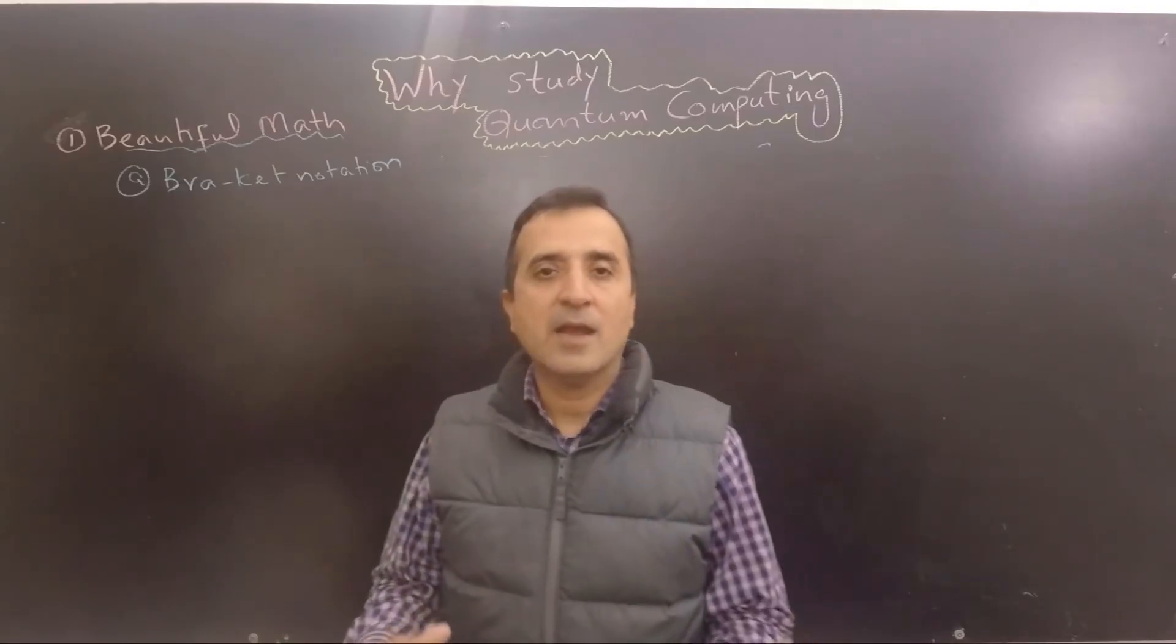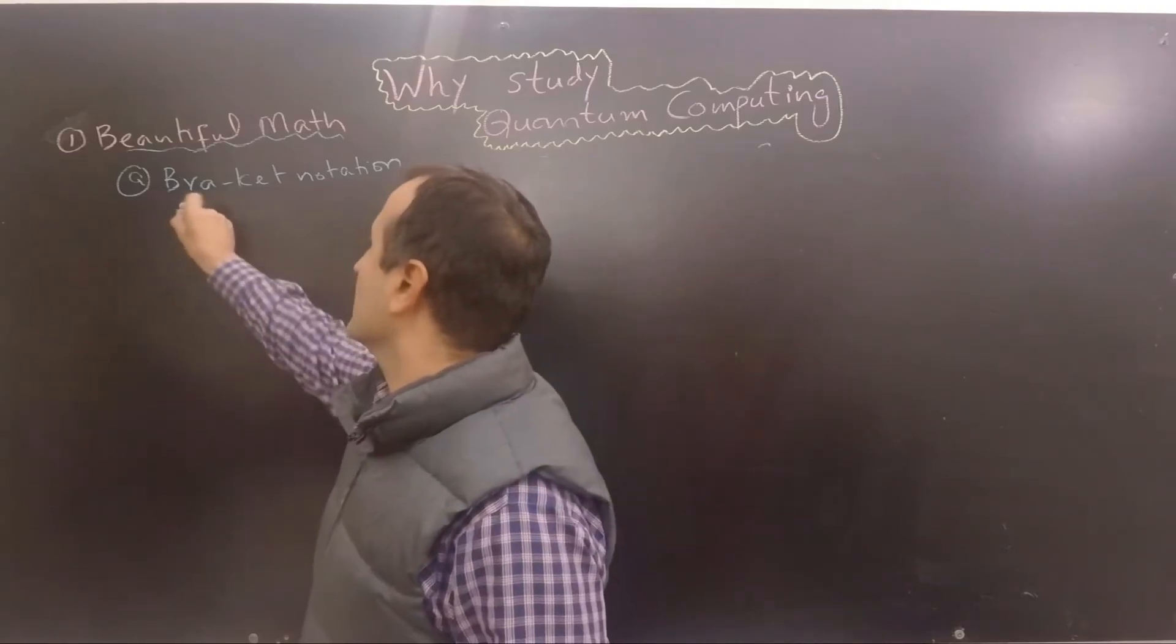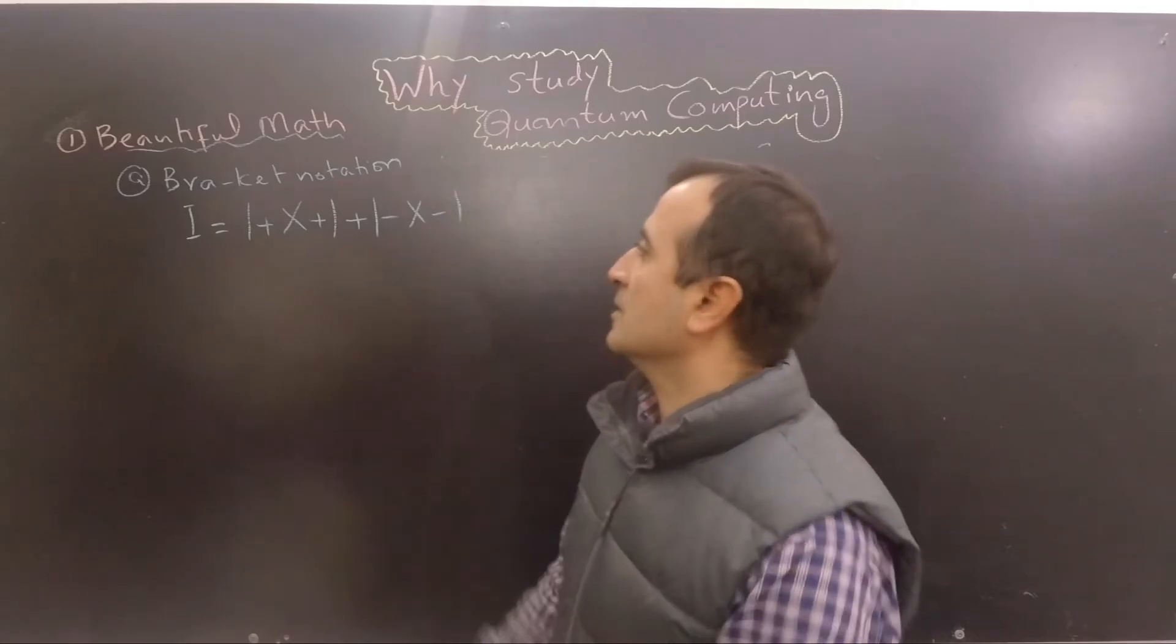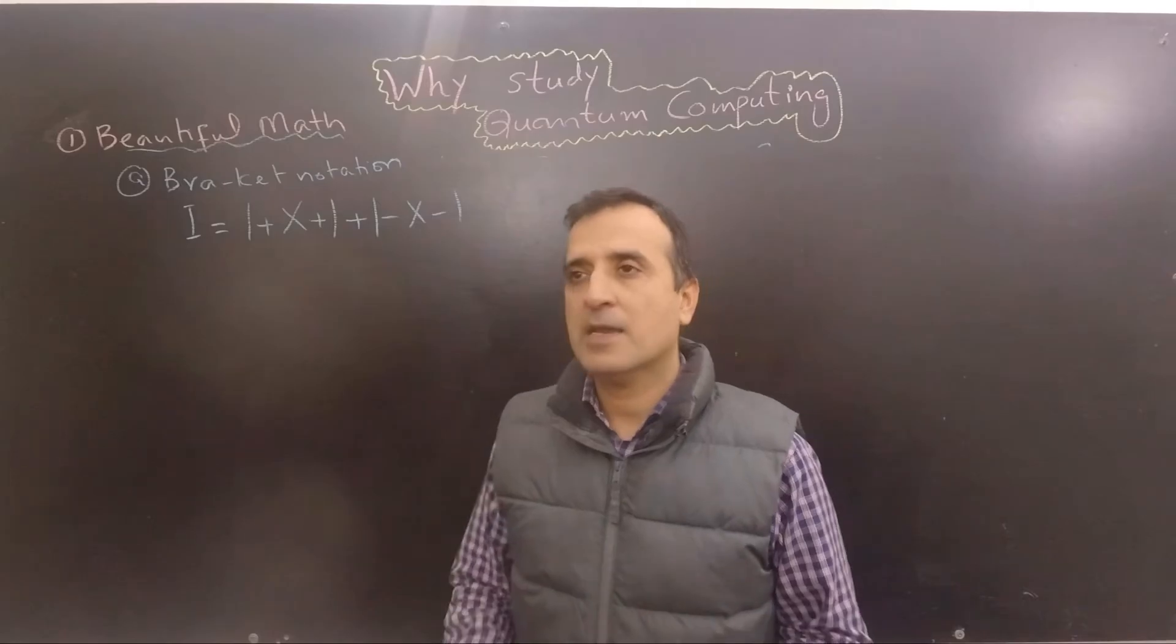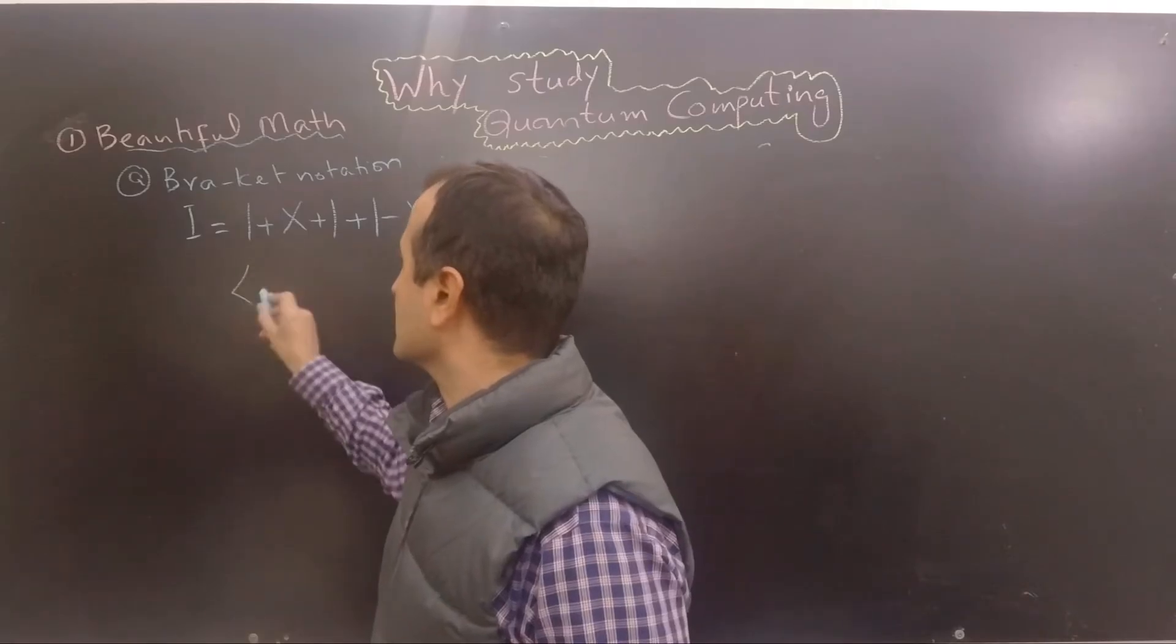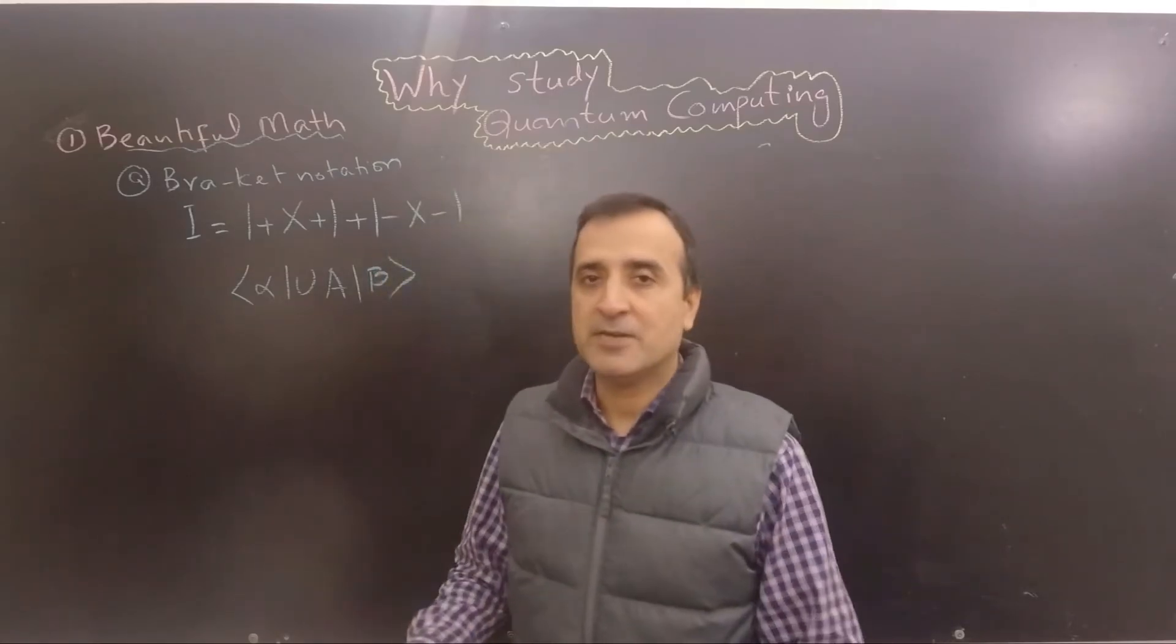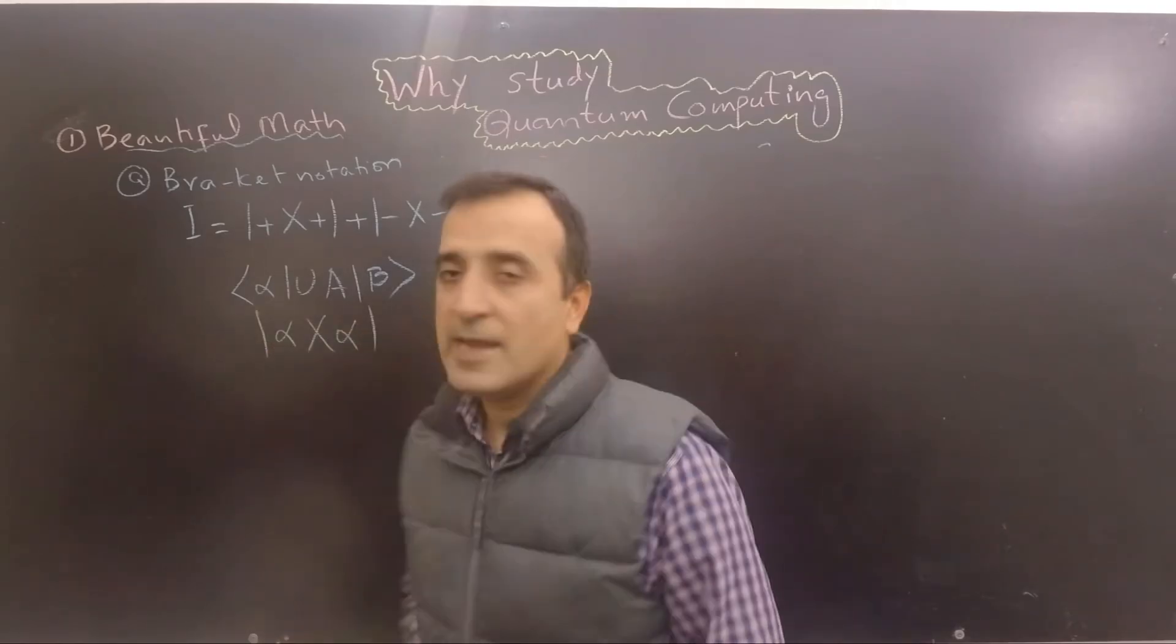For example, I can write identity matrix using this tiny notation. This small notation represents identity matrix. I can write some operations on vectors using this notation. I can write a projection matrix using this notation, and so on.